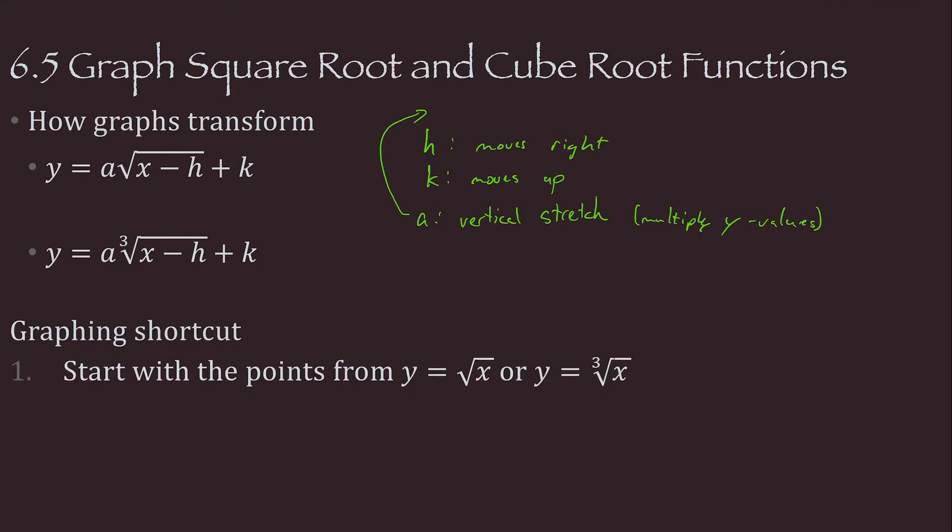So the book would like us to think that we have a graphing shortcut. We'll start with the points from the previous graphs, multiply the y coordinates by A, then move over H to the right and up K. Or you could just make a table of values and make sure your shape matches.